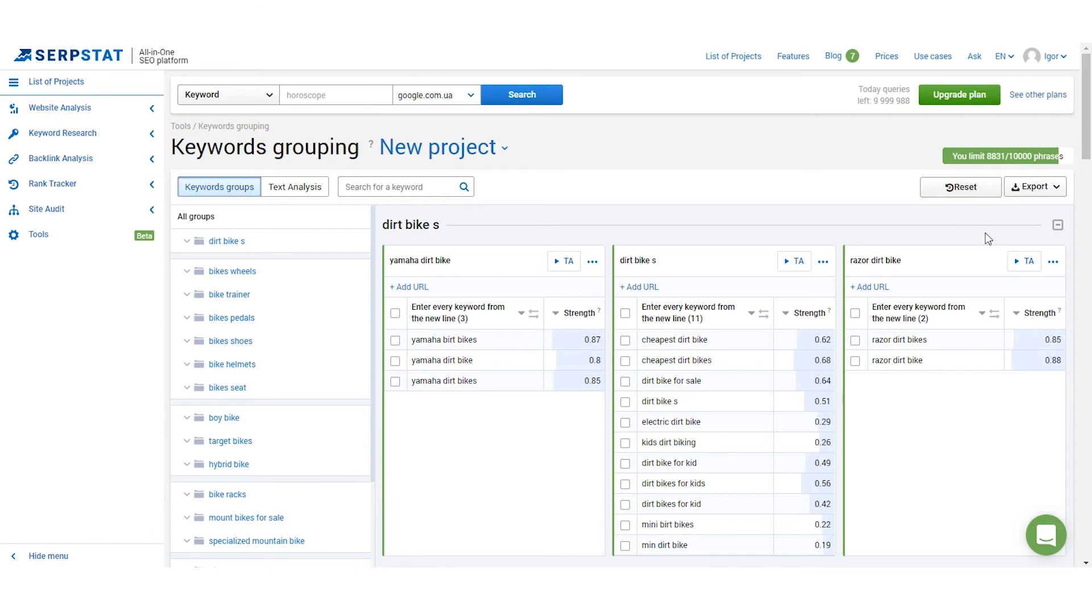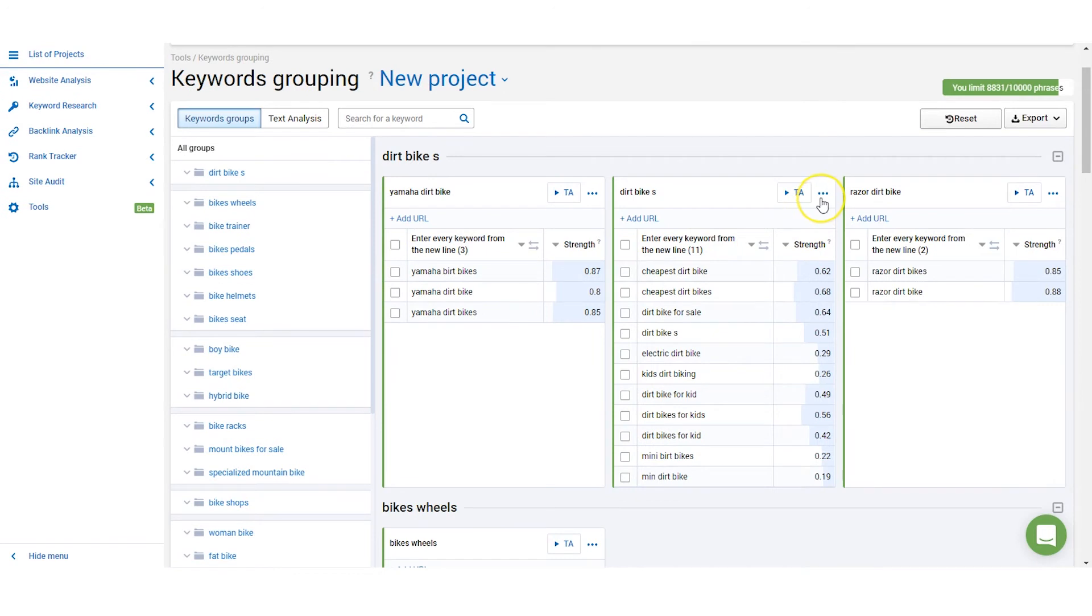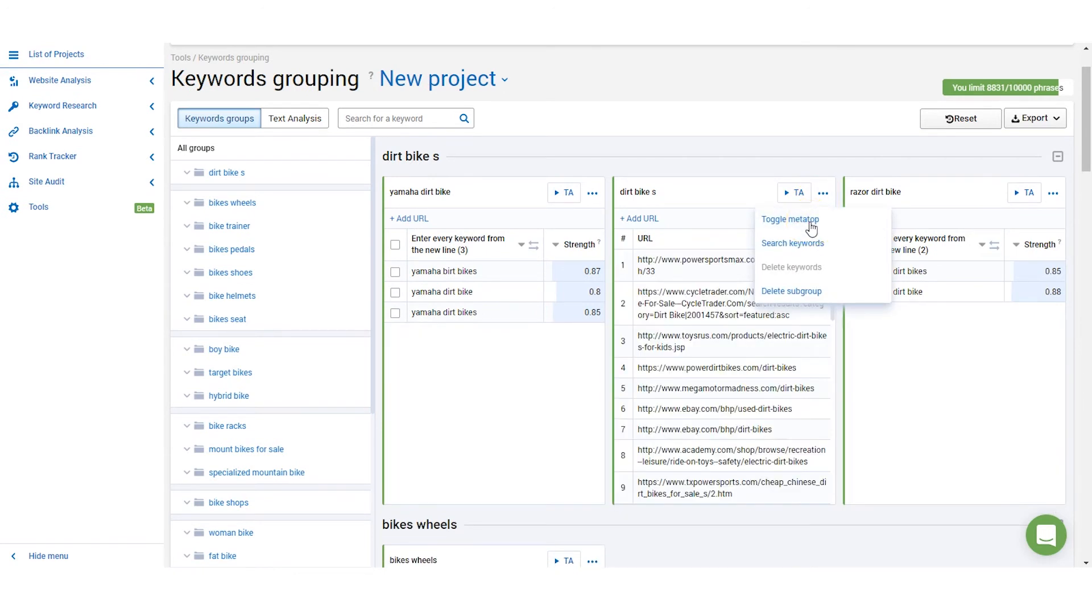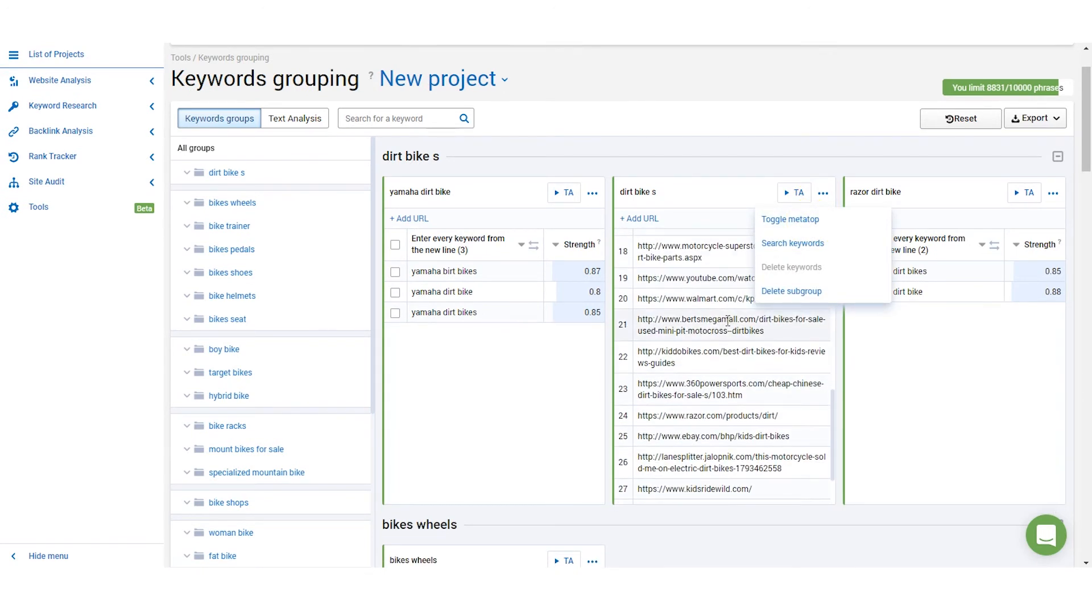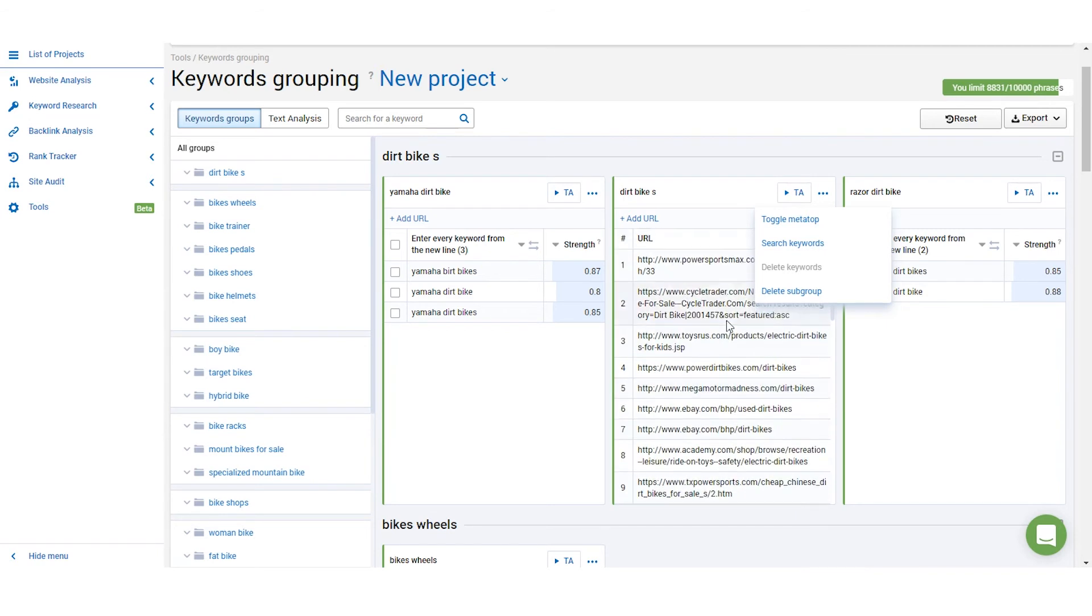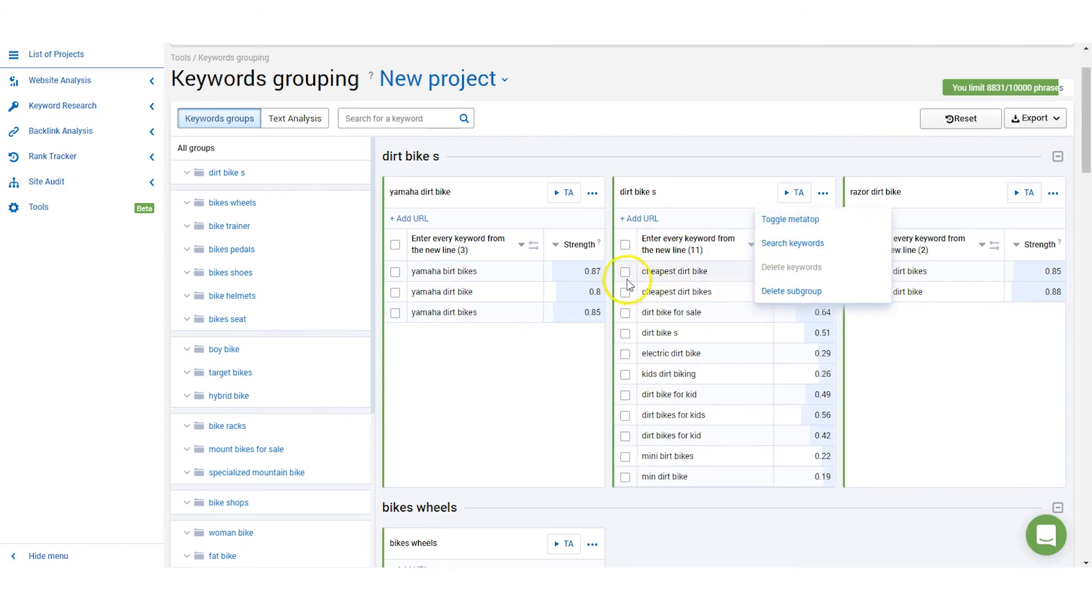On the project page, you will see a list of clusters we created and on the right side from the list, you will see the clusters themselves. For each cluster, we also create a metatop. Metatop is a type of combined SERP for all the keywords from cluster where results are rearranged to show the most relevant ones at the top.